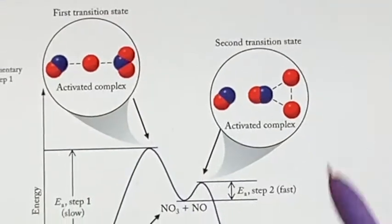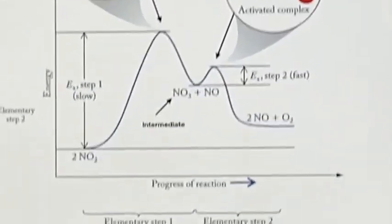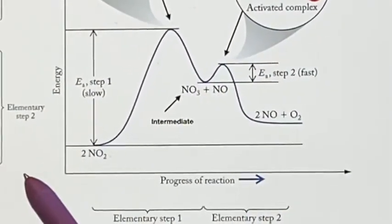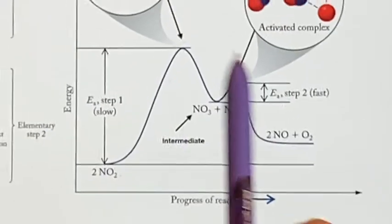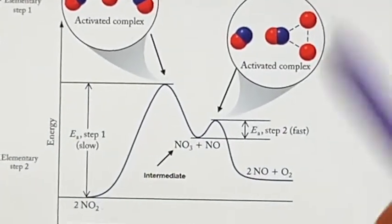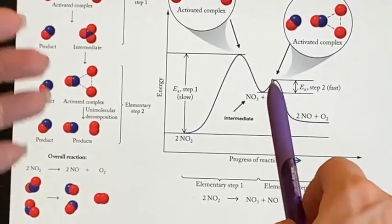The number of hills is telling you how many elementary steps there are. The number of valleys between hills, so you don't count the beginning or the end, just in between, will tell you about the existence of intermediates. You see the two humps? That's indicating there are two steps.